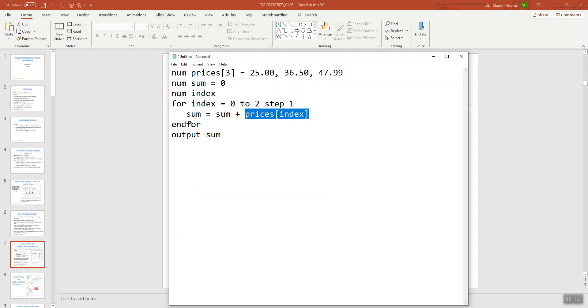It will reach the end for, increment index to 1. Remember the for loop does that automatically for us and loop back around. It loops back around. Index is now 1. So when we get to this statement, it's going to add our current value of 25 to prices sub 1. So it's going to add 36.50 to the existing 25. It continues in this way till we get an aggregate of sum that reflects all three elements.